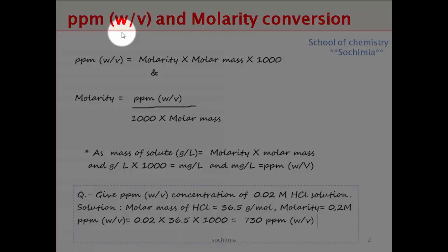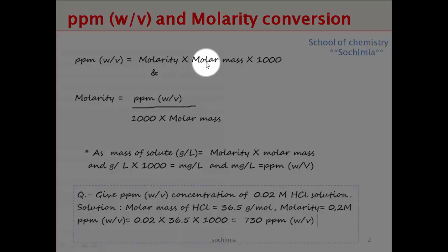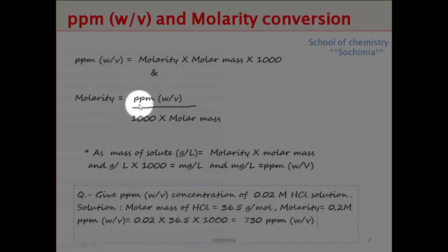If one of them is given, you can calculate the other. We have a simple formula here: ppm weight by volume can be calculated if we have molarity and molar mass of the solute. The simplest formula is that molarity multiplied by molar mass, then multiplied by 1000, will give you the value of parts per million weight by volume. This equation can also be rearranged to calculate molarity if ppm values are given.